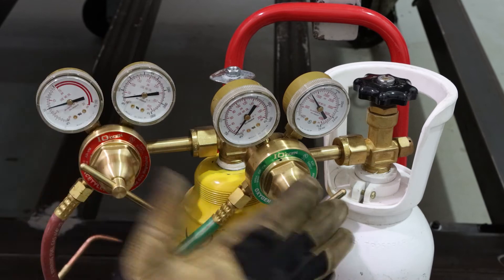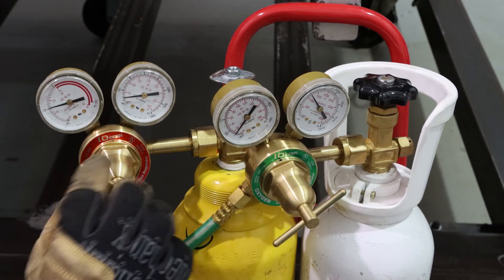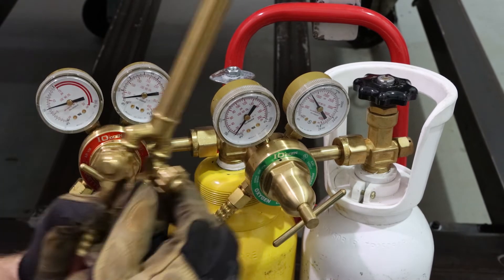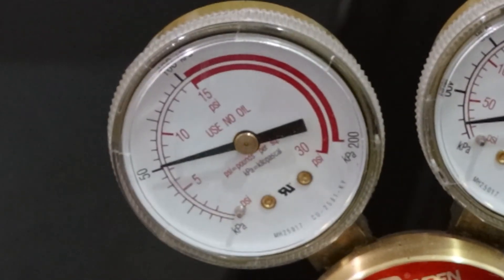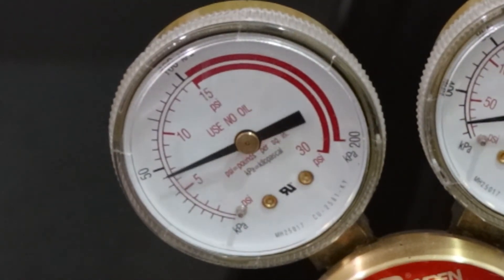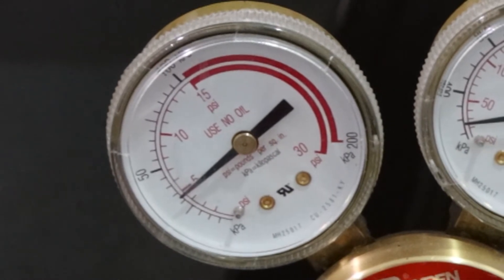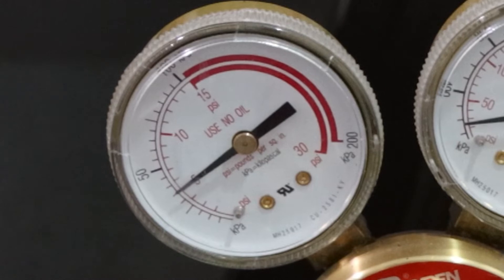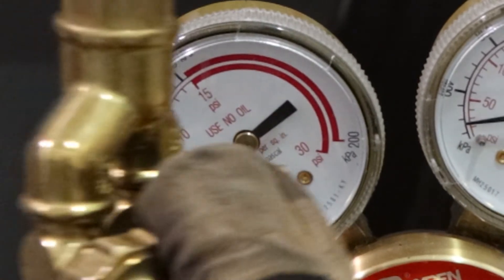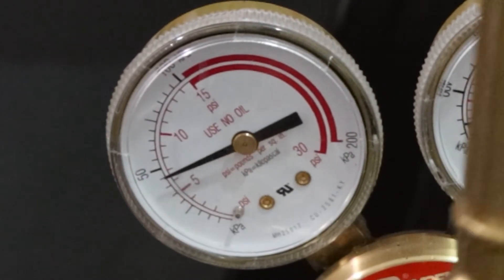Now the acetylene, we're going to do half of the oxygen. So we're going to crack it open on the torch. That's the oxygen. There we go. And we're going to regulate that to about five. And then make sure you close it off on the torch.